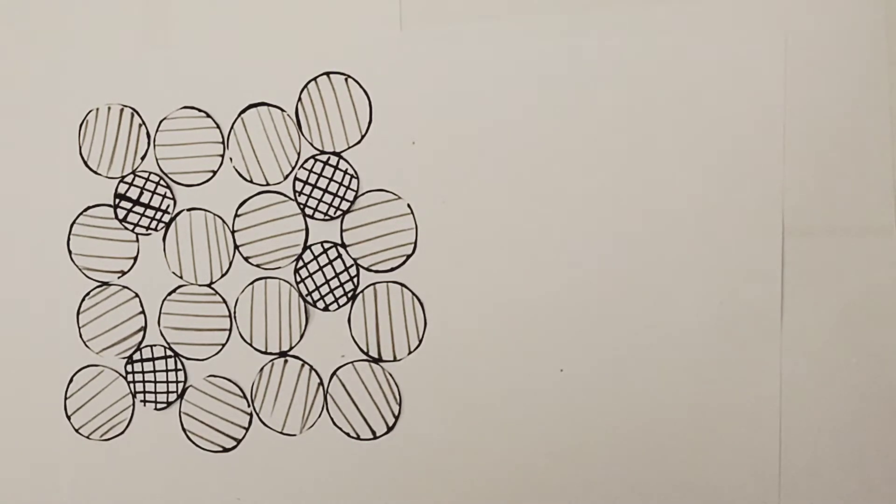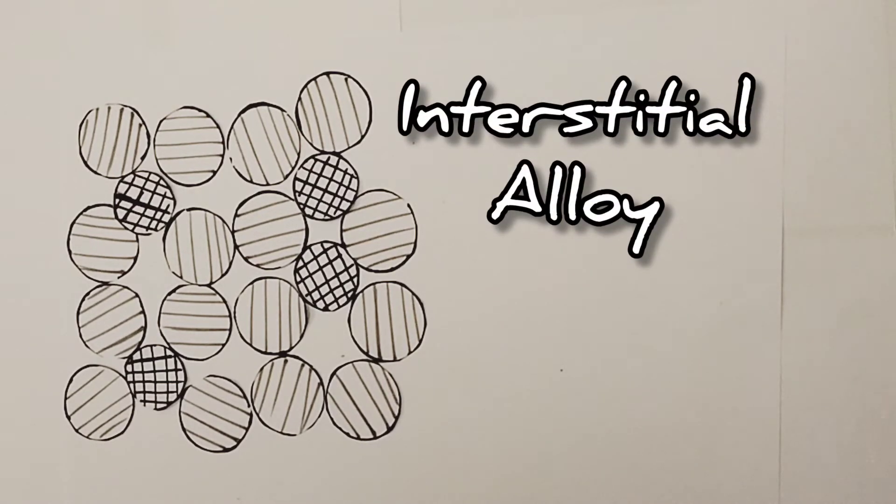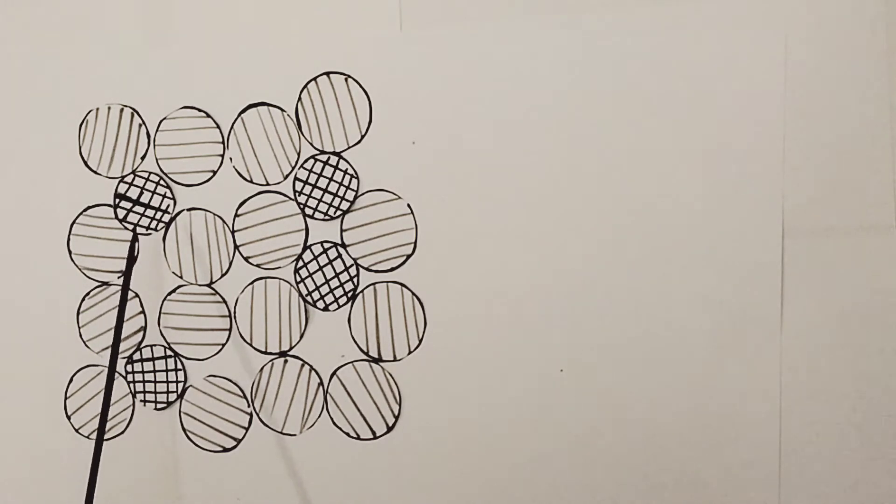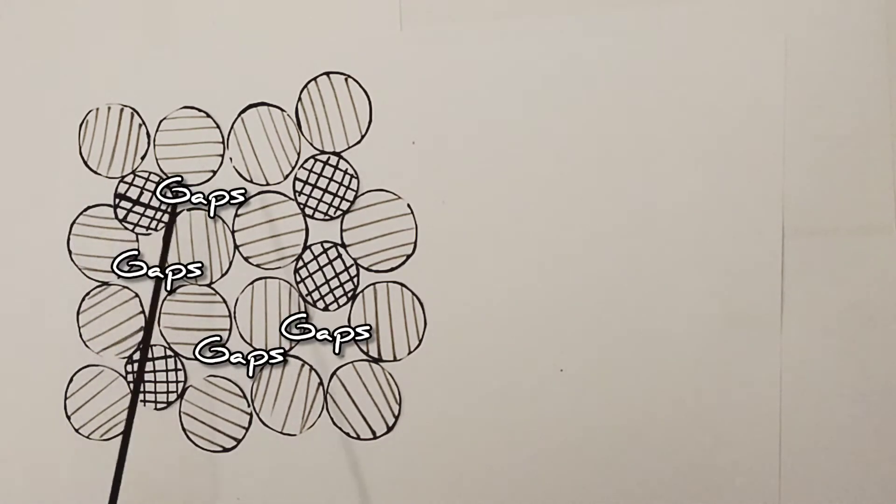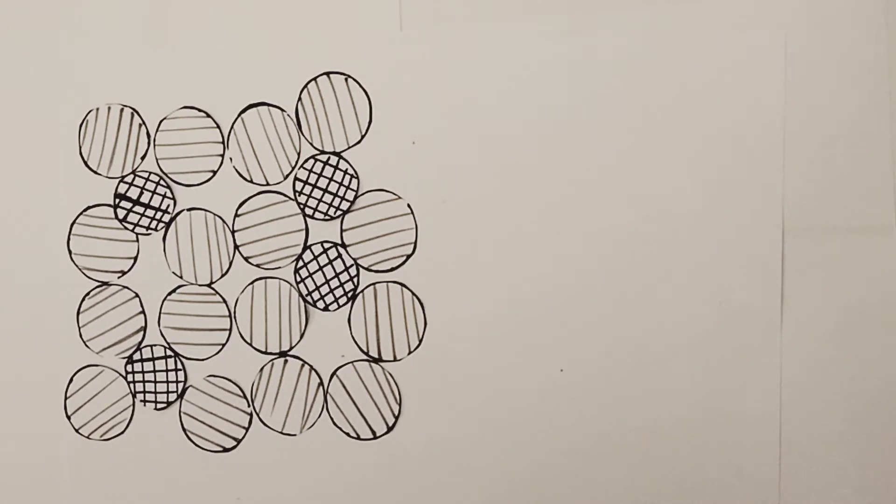This alloy is an example of what is known as an interstitial alloy, because the carbon atoms we've introduced are sitting in gaps between the metal cations within the lattice structure. This is one of two main types of alloy you may come across.